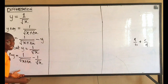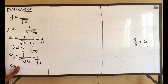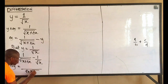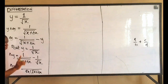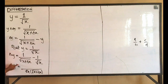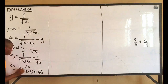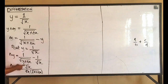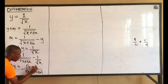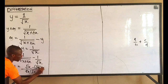The LCM here is root(x) times root(x + Δx). So change in y equals: root(x + Δx) times 1 — that gives root x — minus root x times 1 — that gives root(x + Δx), all over the LCM which is root(x) times root(x + Δx).